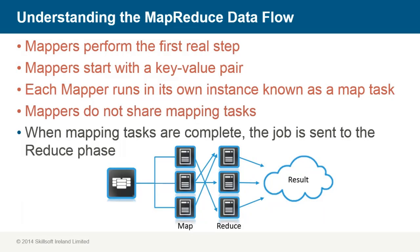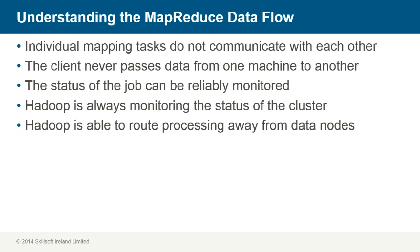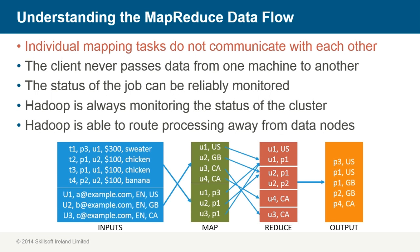This task encapsulation guarantees that mapping tasks are not affected by the unreliability of the mapping process. When mapping tasks are complete, the job is sent into the reducing phase. Individual mapping tasks do not communicate with each other, nor do they even know that each other exists. This is the same with reduced tasks. The client never passes data from one machine to another.